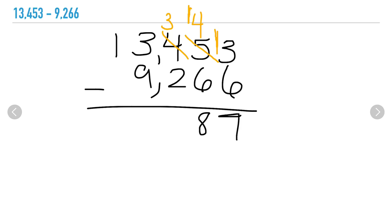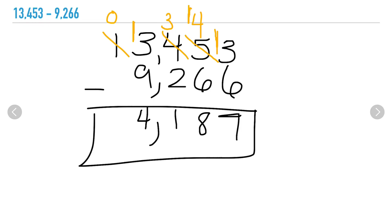8 — good job. Now let's move on to our hundreds: 3 minus 2, easy — that's 1. And our thousands: 3 minus 9, I can't do that, so I need to borrow from the ten-thousands. I'm borrowing one ten-thousand from 10,000, which leaves me with 0 ten-thousands, and I can give that to my thousands to make 13 thousands. 13 minus 9 is 4. So 13,453 minus 9,266 is 4,187.